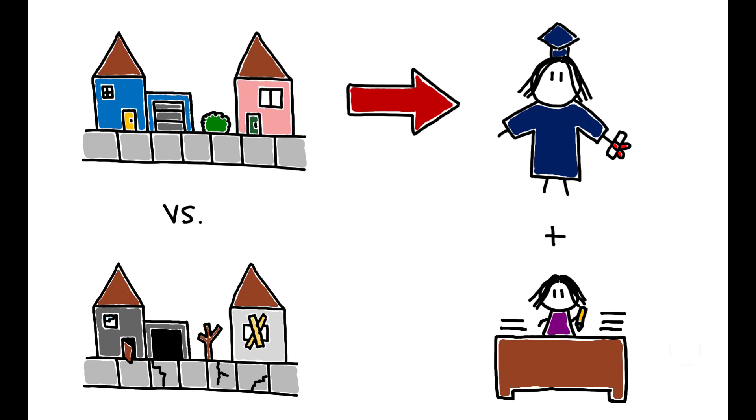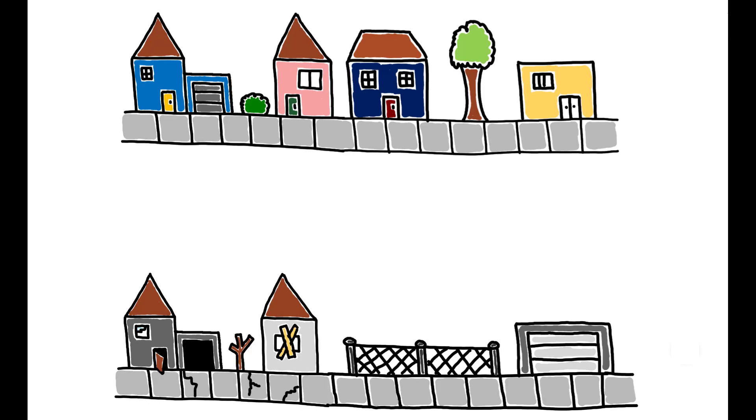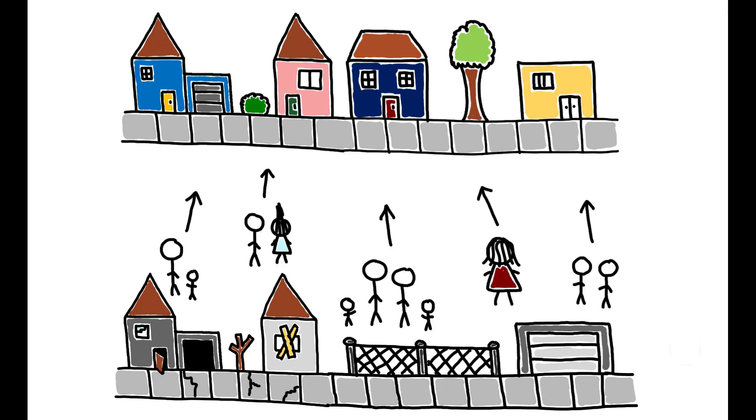This raises the possibility that a policy lever for reducing inequality is to incentivize families to move to opportunity, or to relocate to better neighborhoods. But to what extent is this a scalable proposition? Would a large-scale migration of households from low to high opportunity neighborhoods actually be effective at reducing inequality?